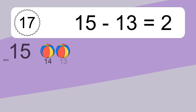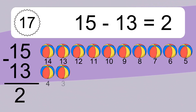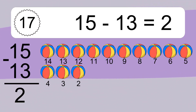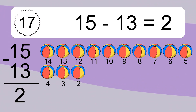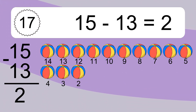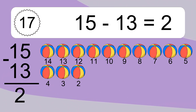15 minus 13 equals what? 15 minus 13 equals 2. Let's count it: 14, 13, 12, 11, 10, 9, 8, 7, 6, 5, 4, 3, 2.